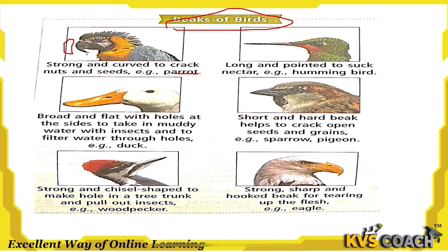The hummingbird has a long and pointed beak used to suck nectar. The duck has a broad and flat beak with holes at the sides. It goes into muddy water to filter out insects and water through these holes.